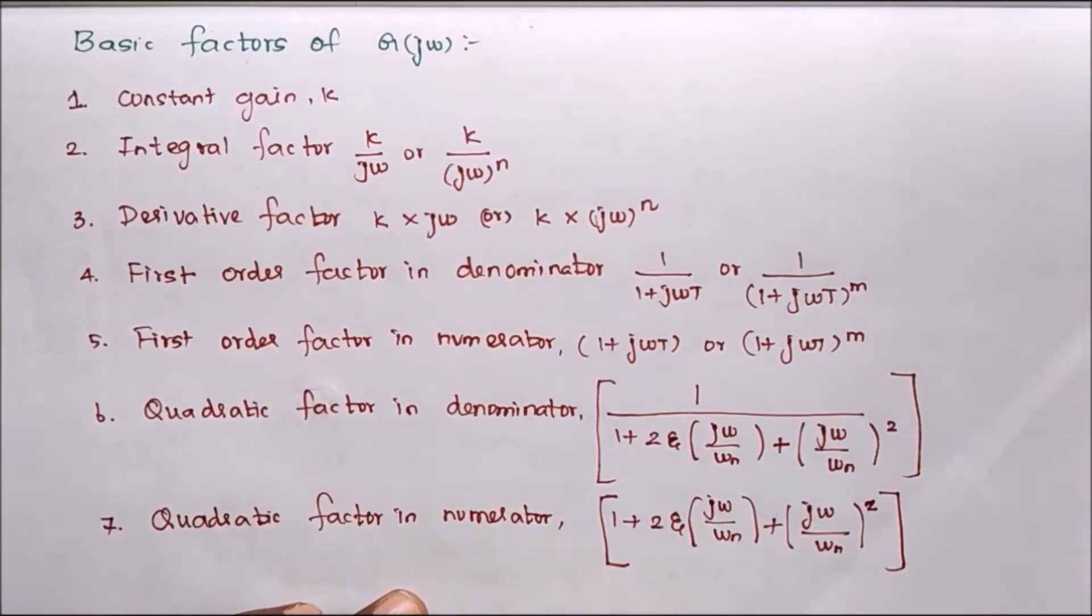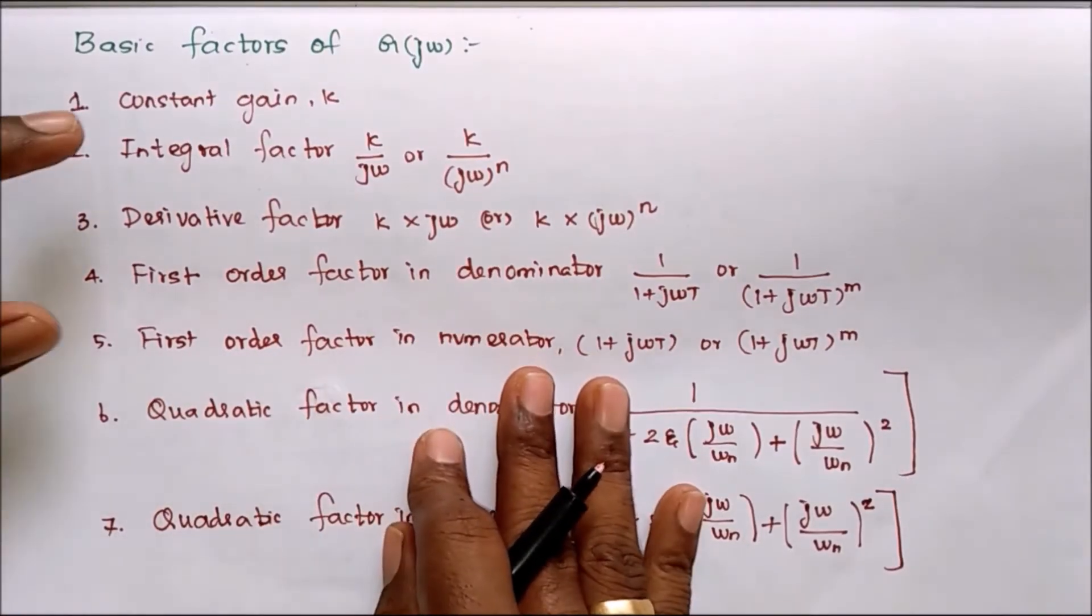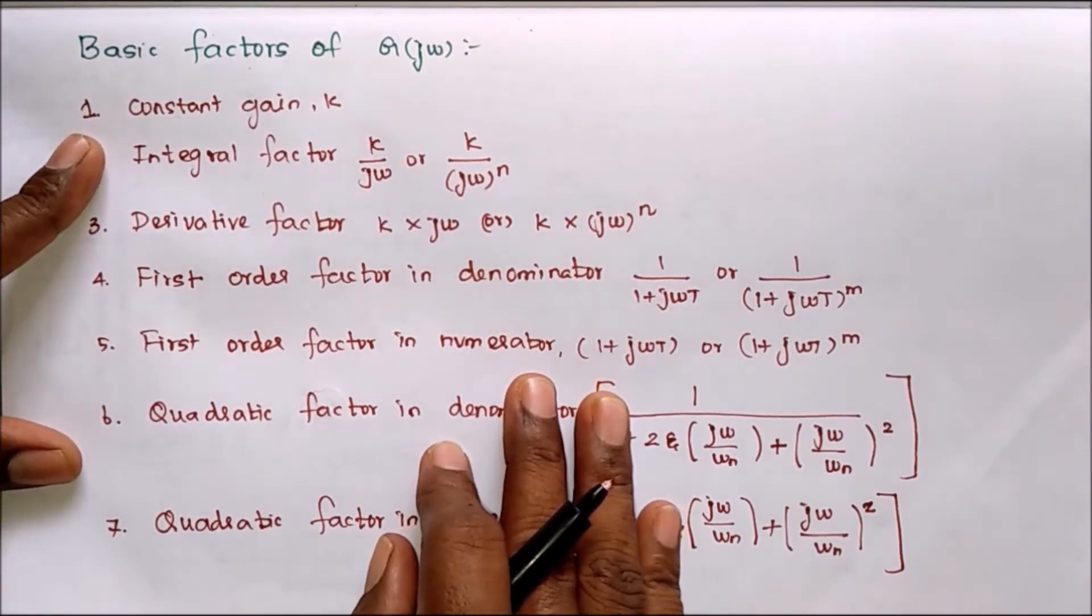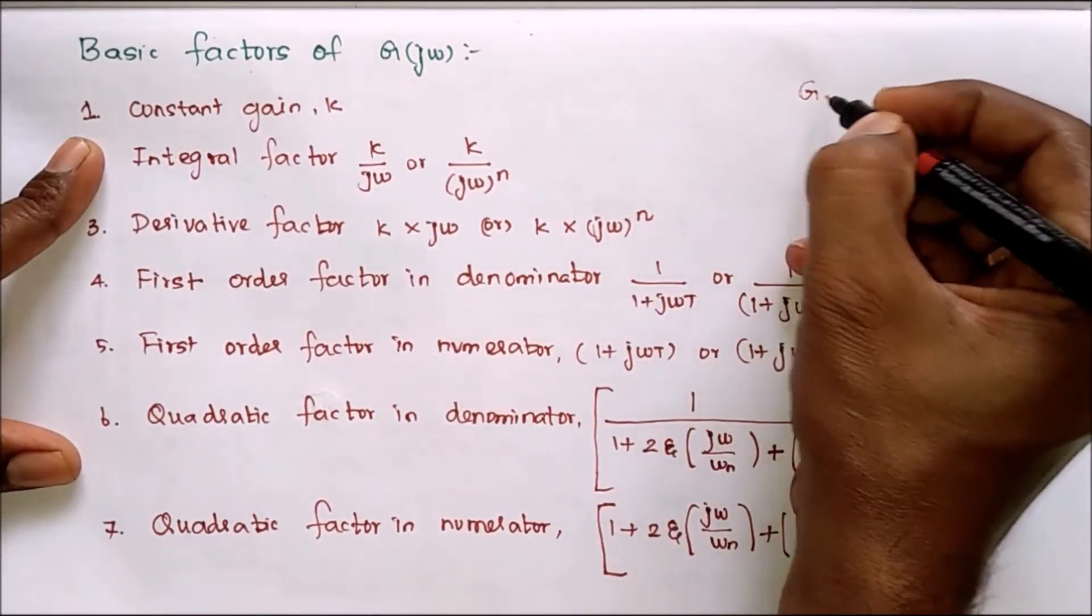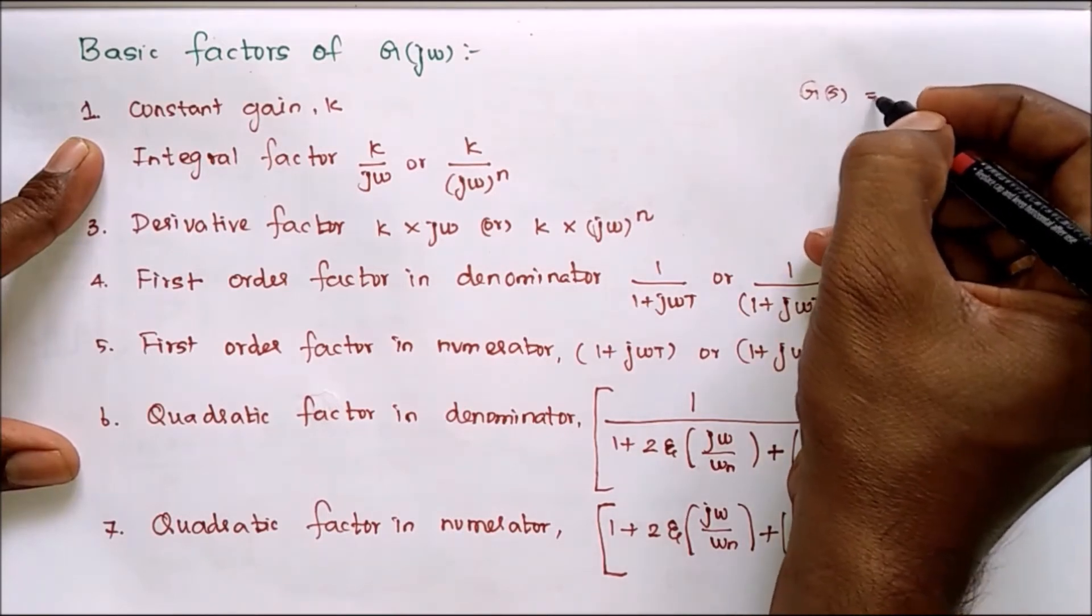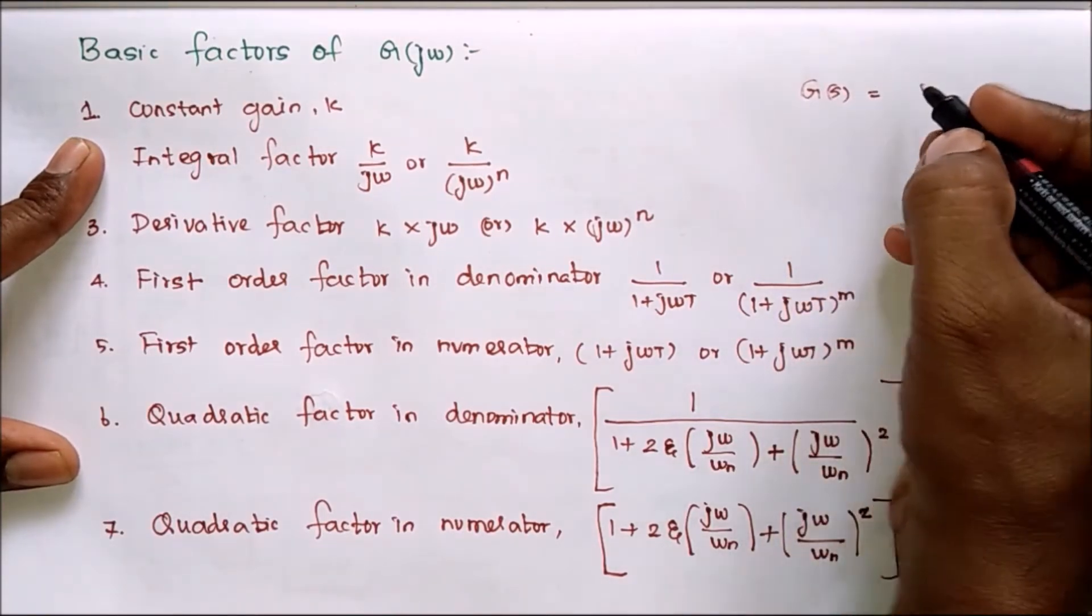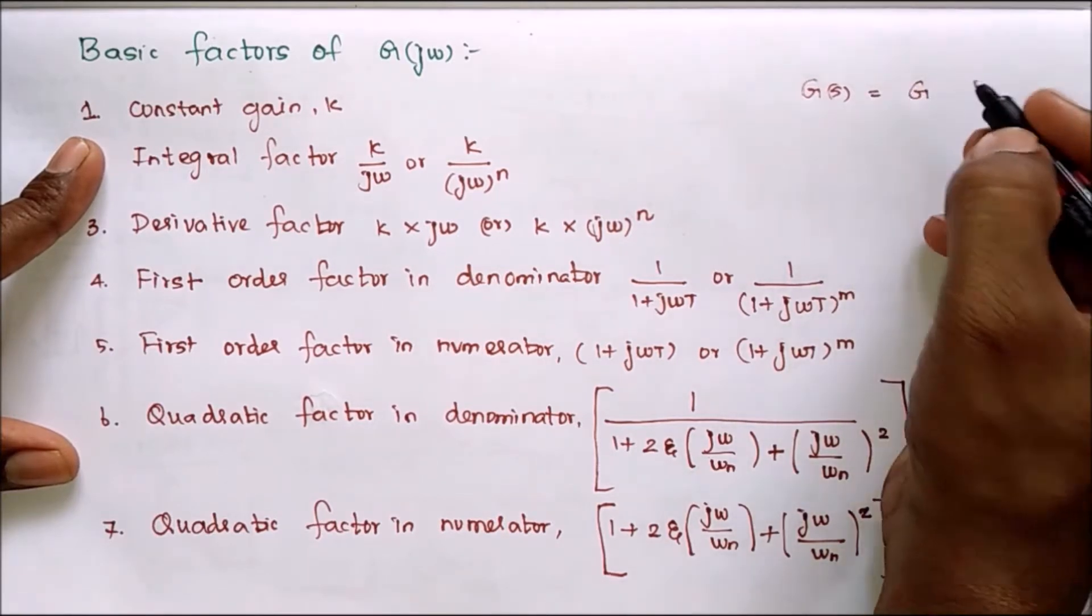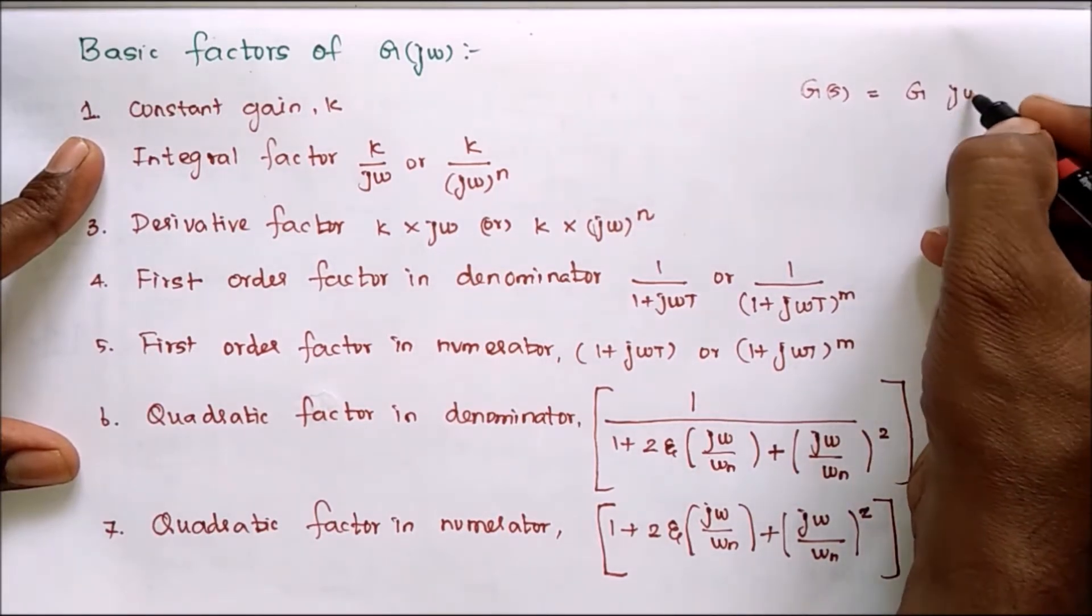In this video we are going to see the basic factors of open loop transfer function. Actually we know G is the transfer function of open loop system in terms of S domain. For frequency response analysis we have to replace S by jω.